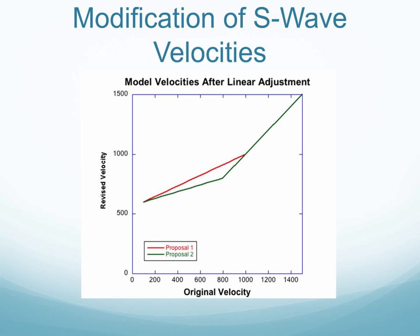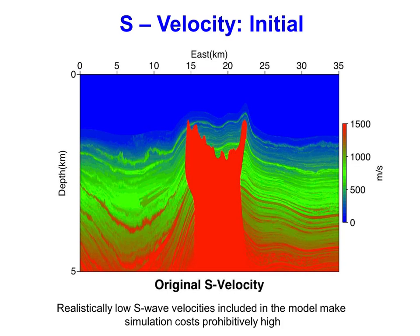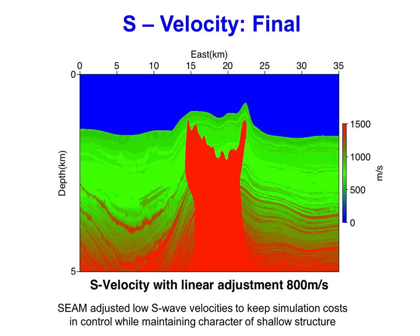The idea was to compress the scale of S-wave velocity while also setting a lower bound. This east-west vertical cross-section through the model shows the S-wave velocity as originally designed, with velocities as low as 120 meters per second near the seafloor. After adjustment, the minimum S-wave velocity below water is 600 meters per second. Going back and forth between the two slides shows how we compressed the velocity scale in regions where S-wave velocity is low while still trying to maintain some heterogeneity.